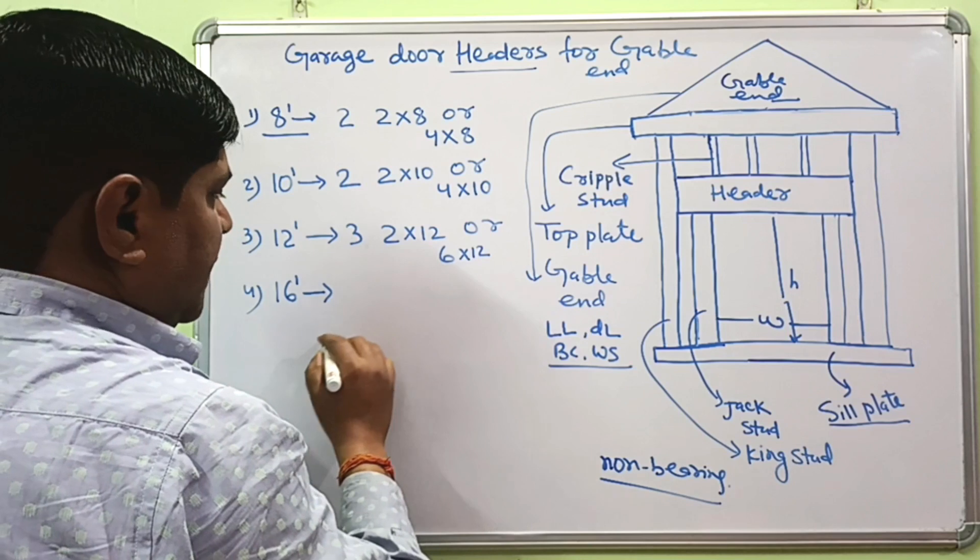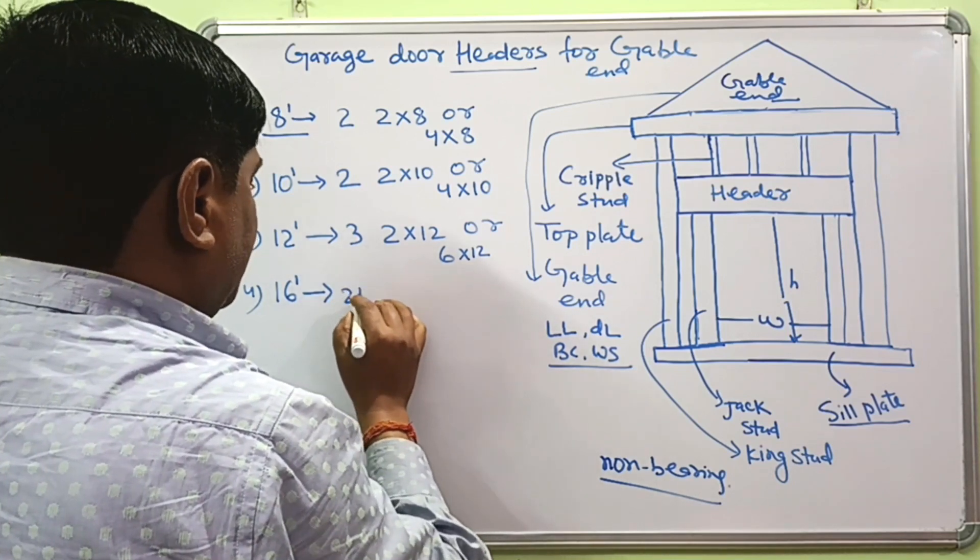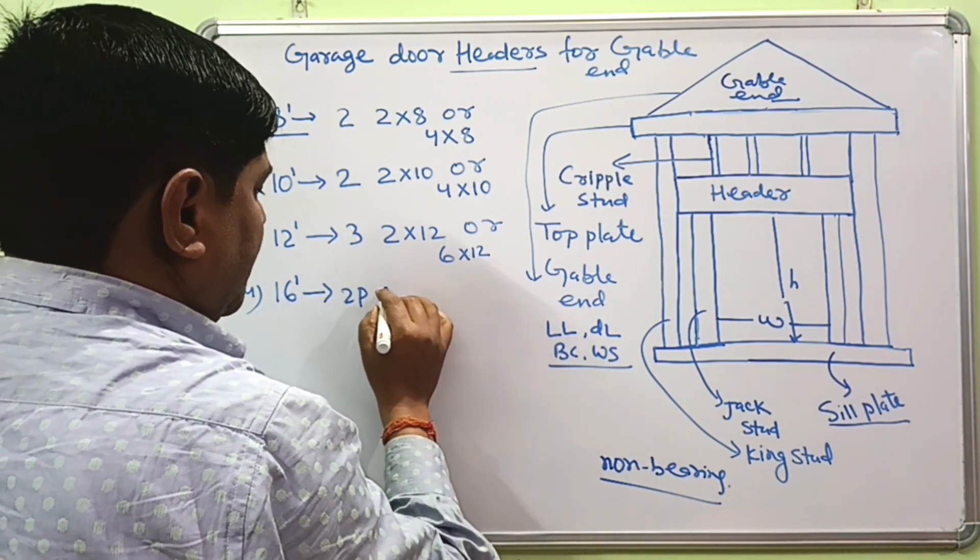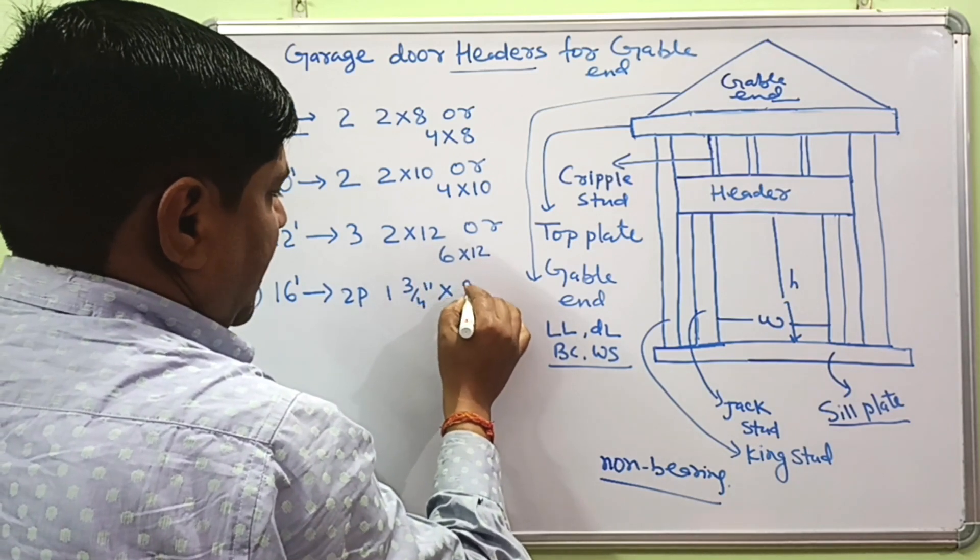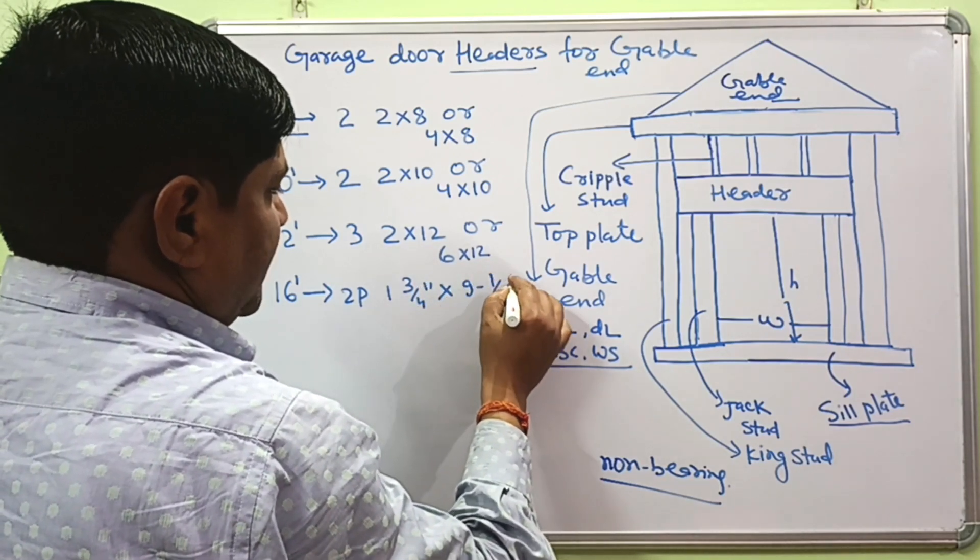If your garage door is about 6 foot opening, you can simply use 2 pieces of appropriate lumber.